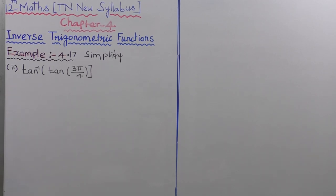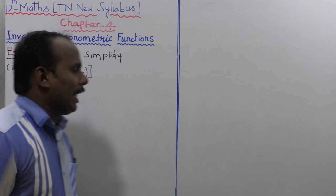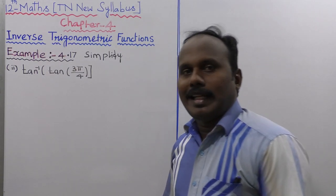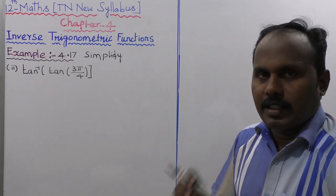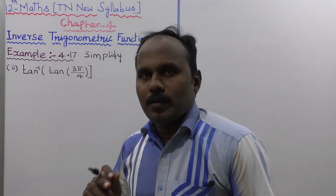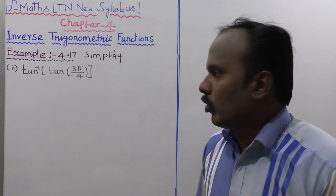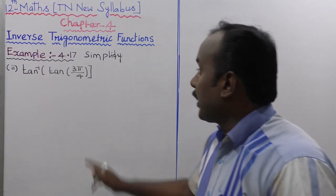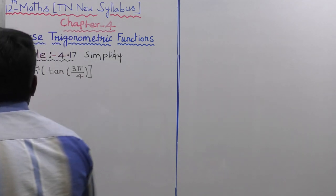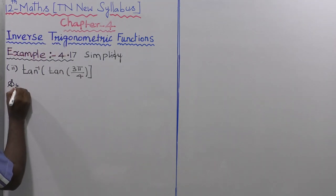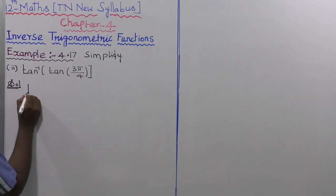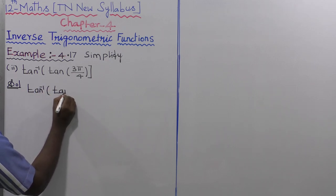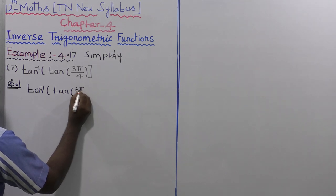Example 4.17: simplify tan inverse of tan of 3π/4. The principle value range of tan inverse of x is the open interval minus π/2 to plus π/2. So this angle does not exist per principle values. Let us take the given value: tan inverse of tan(3π/4).